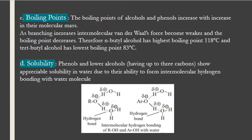Another property is boiling point. Boiling points of alcohols and phenols increase with increase in their molecular mass. As branching increases, intermolecular Van der Waals forces become weaker and boiling point decreases. Therefore, n-butyl alcohol has the highest boiling point at 118°C and tertiary butyl alcohol has the lowest boiling point at 83°C.